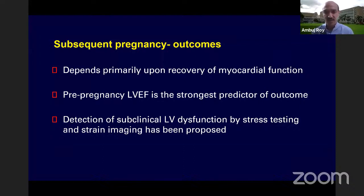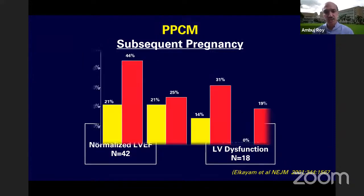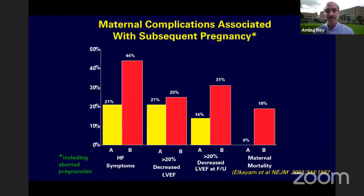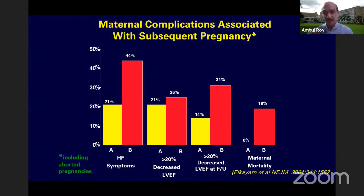Optimal duration of medications following recovery is not fully established, but taking cues from dilated cardiomyopathy, patients should be maintained on neurohormonal blockade for some time and gradually weaned — not abruptly discontinued, as seen in DCM patients. The pathogenesis, genetic, and hormonal milieu questions remain. Bromocriptine remains experimental and larger studies are needed. Thank you.